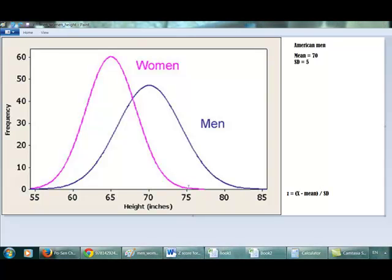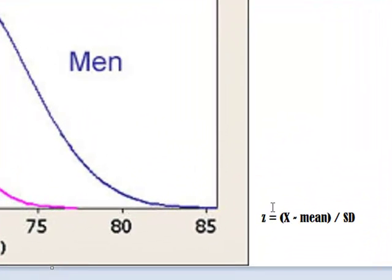This is how you calculate z-score. The process of converting a raw score, in this case 75, into a z-score is called standardization. To calculate the z-score, we use this formula.